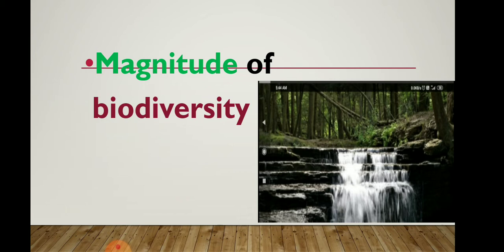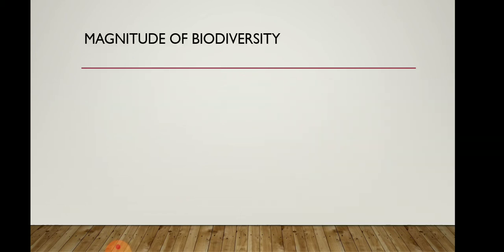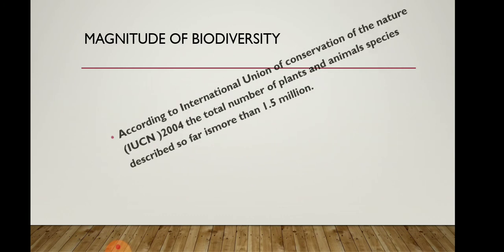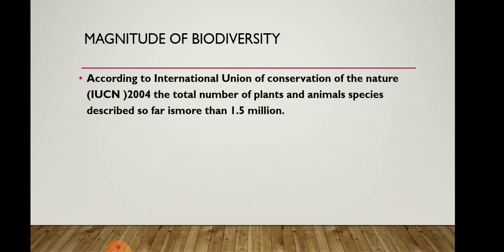Today we discuss about the magnitude of biodiversity. According to the International Union of Conservation of Nature — IUCN — in 2004, they described that the total number of plant and animal species described so far is more than 1.5 million. So the plant and animal species which are present on the earth's surface number 1.5 million.